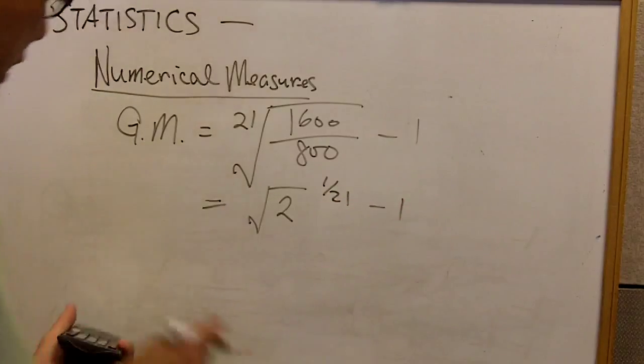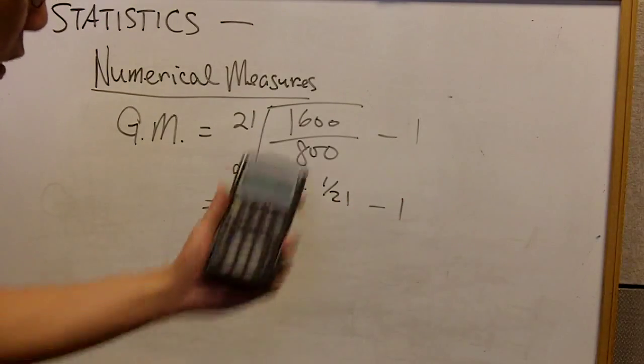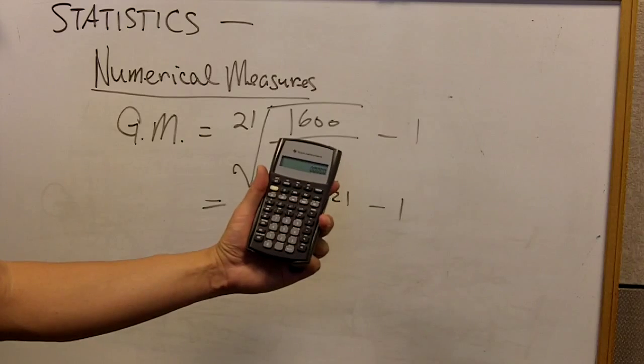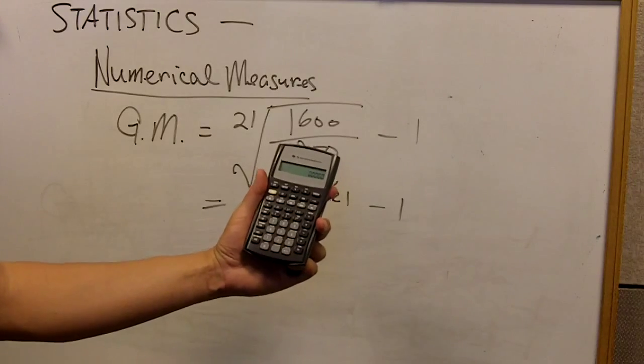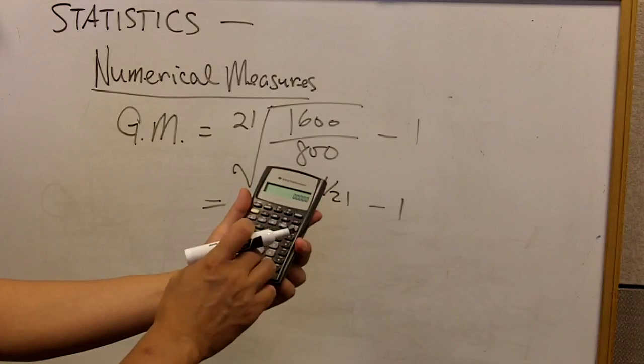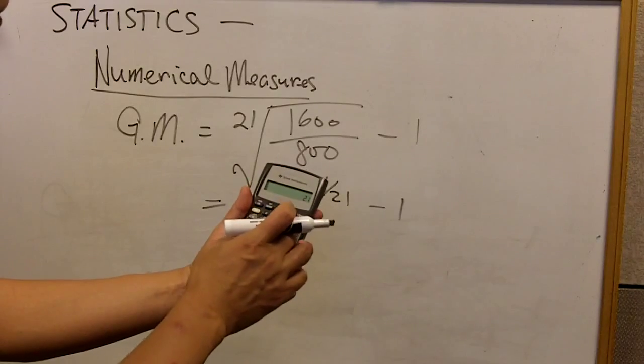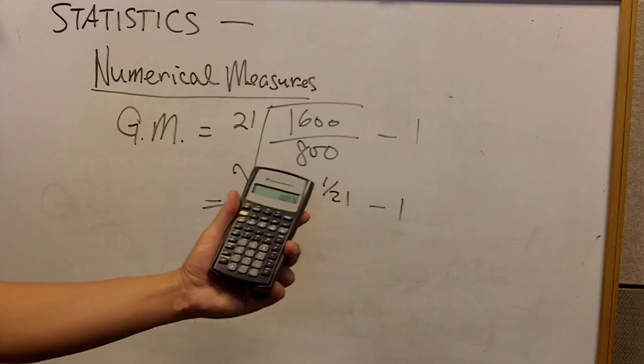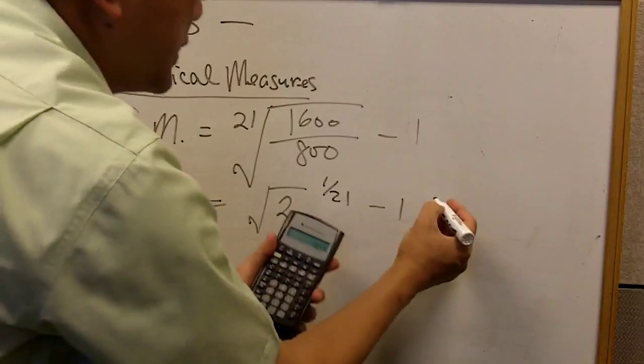And if you use a calculator like this one, it is a Texas Instrument Business Analysis Tool plus, and you can put 21 here and push the button 1 over x.